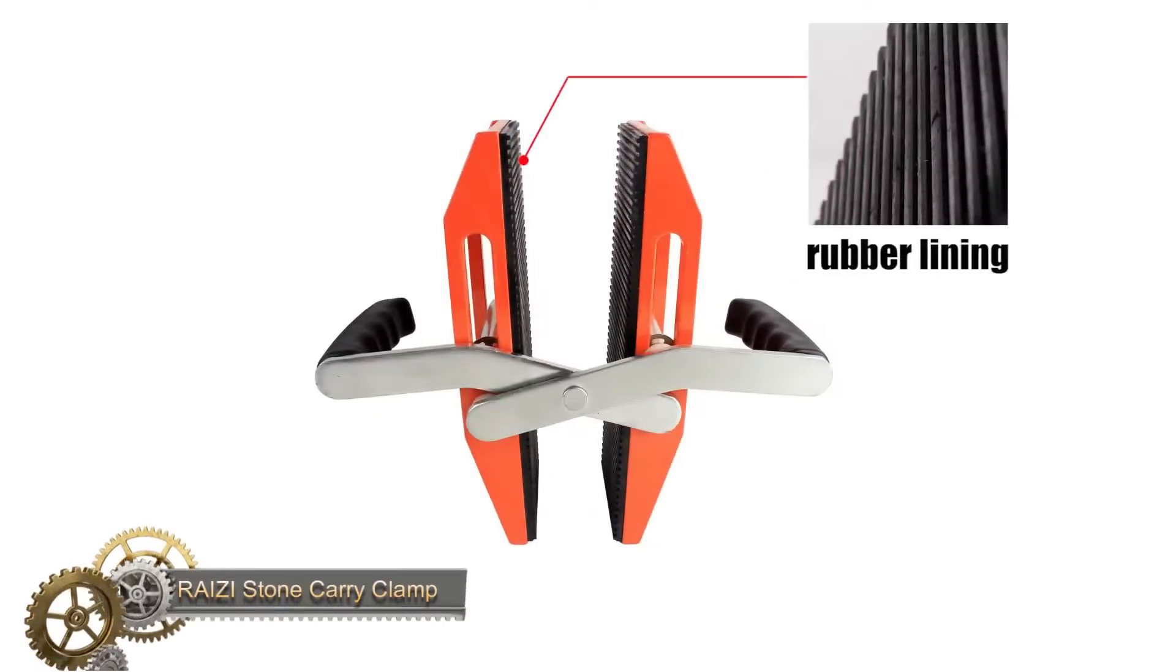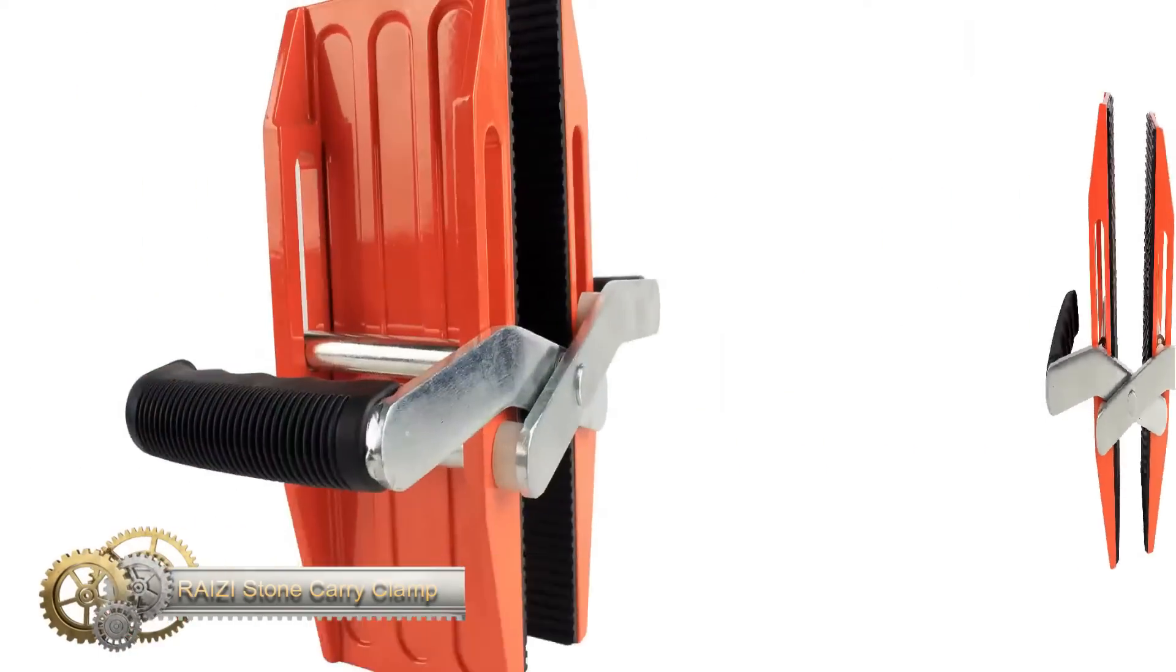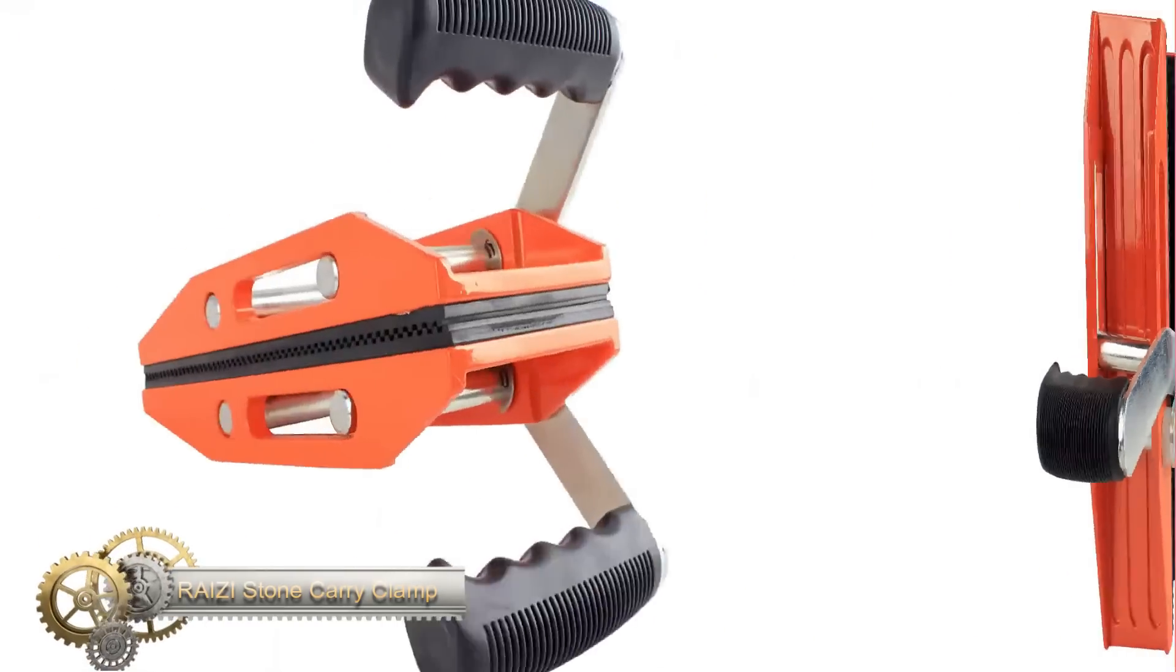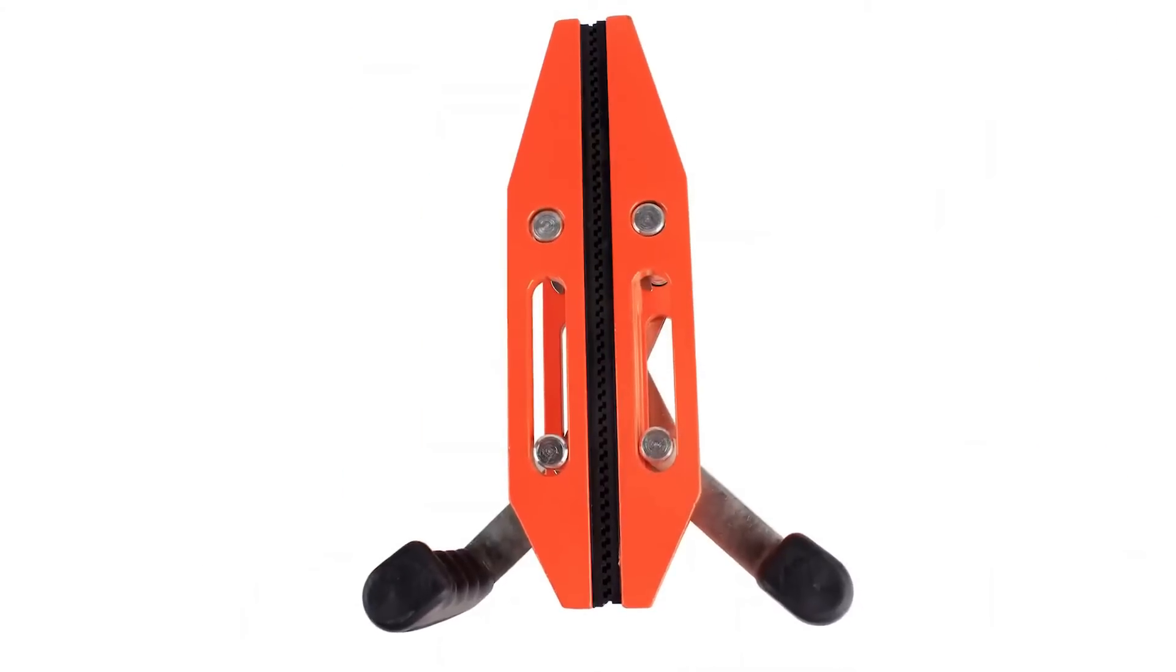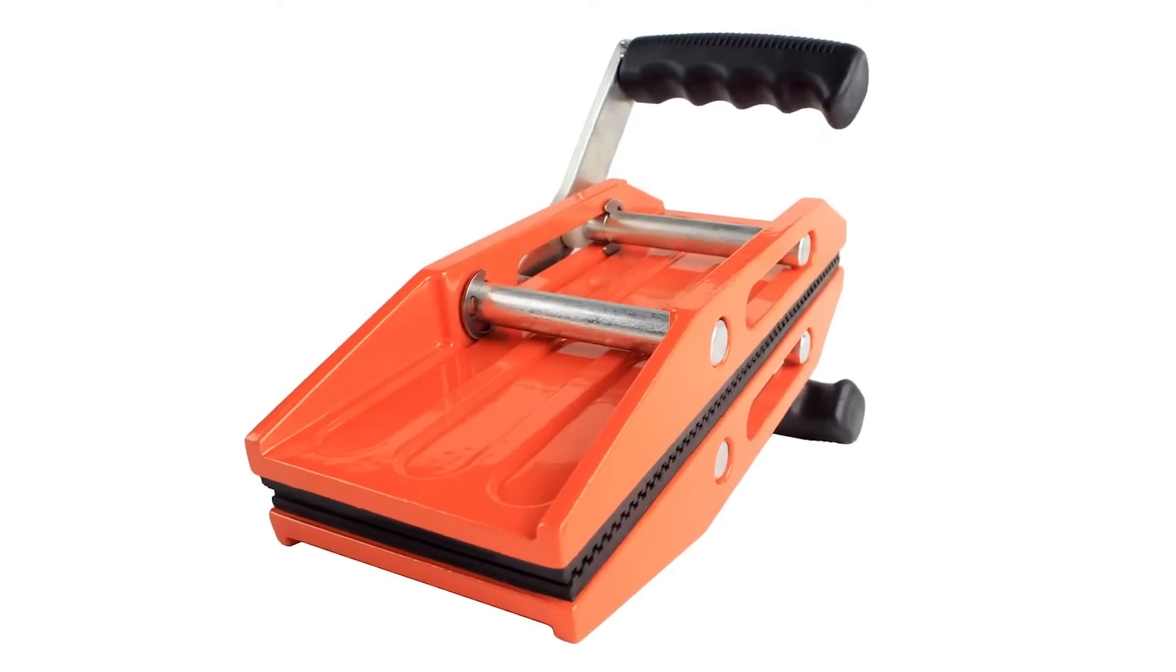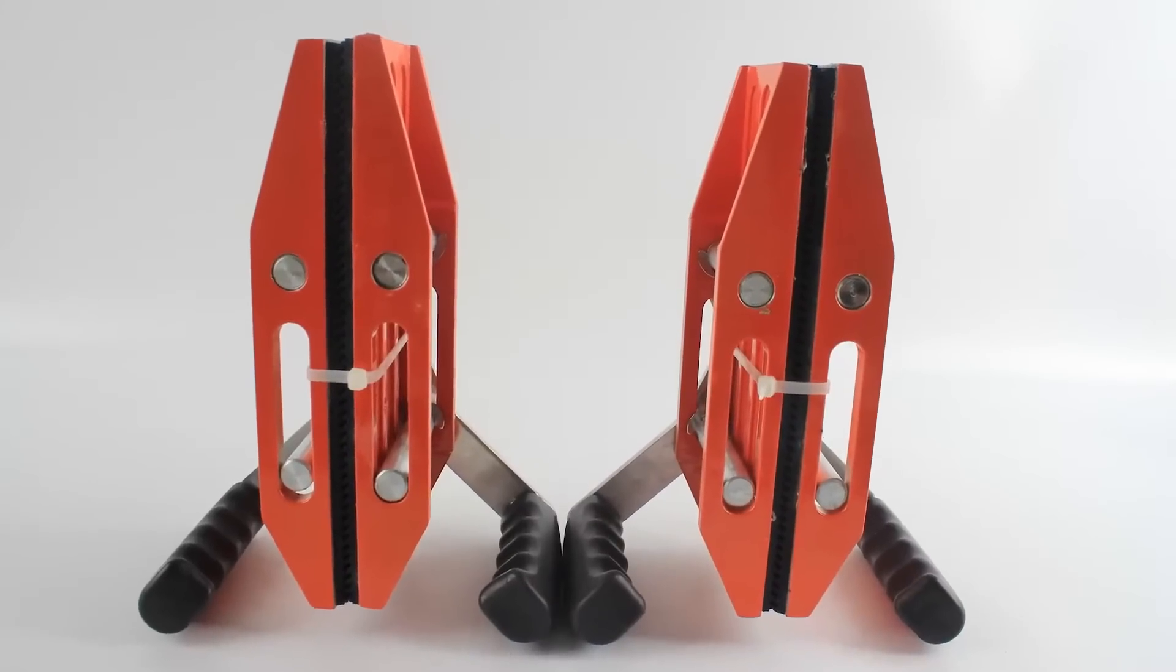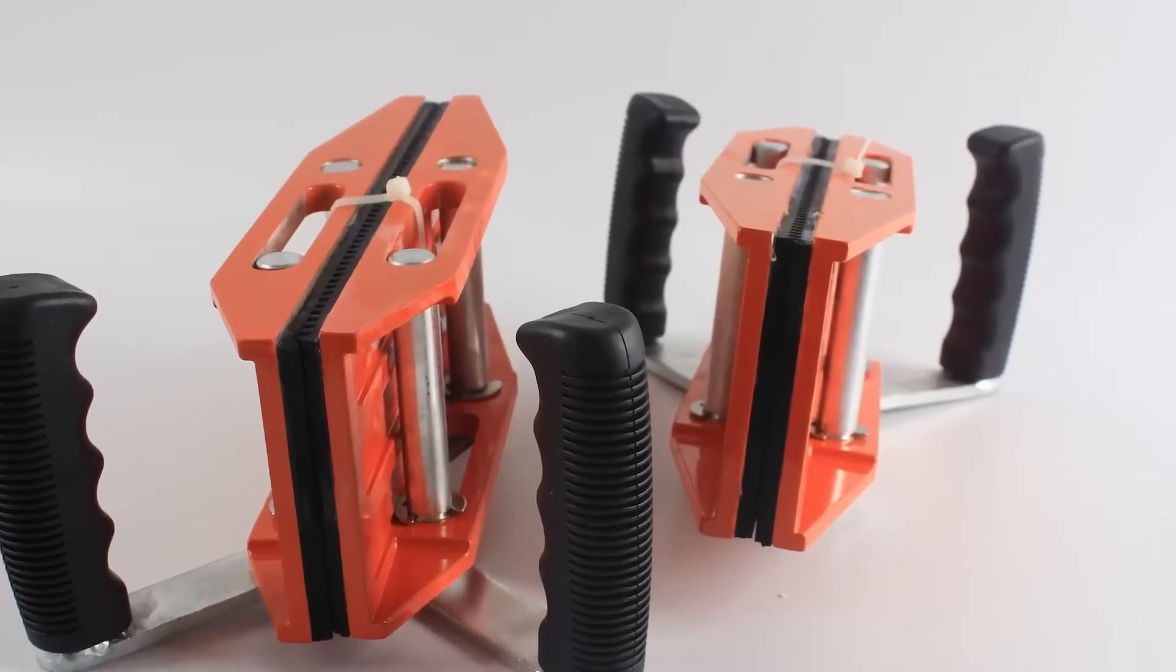The RAZE double-handed carry clamps are the ultimate tool for safe and comfortable lifting and carrying of panels. Designed to be used in pairs, these clamps use the weight of the stone to provide clamping action, while the vulcanized rubber lining prevents damage to the material surface. Perfect for moving a variety of materials, these carrying clamps are ideal for use on job sites, in shops, and for home installations.